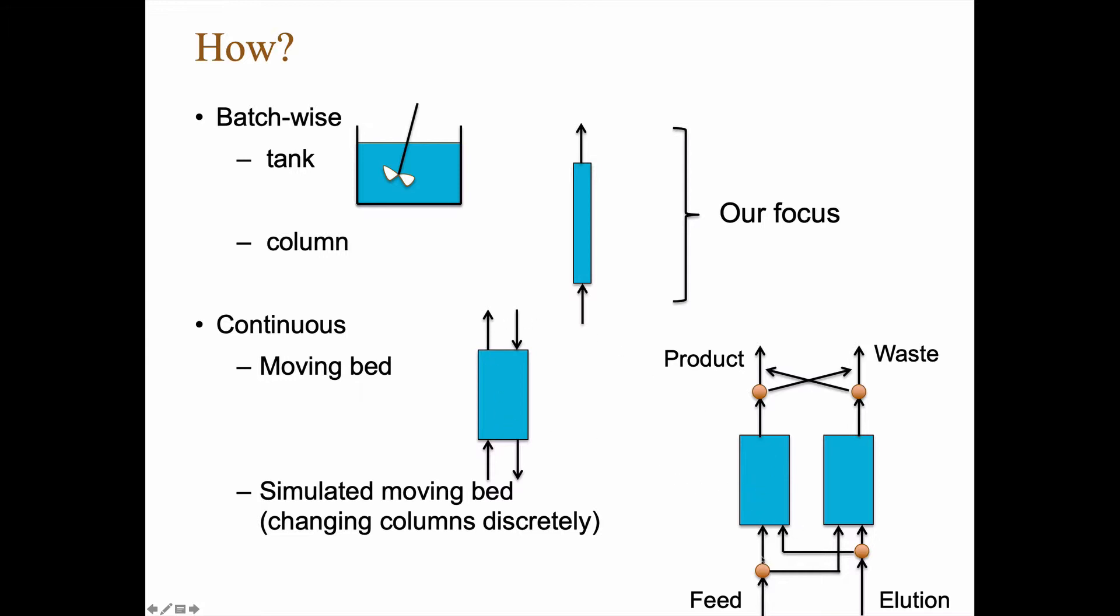And then you switch. So in the simplest case, you only have two columns. So first, you take the feed into one of them, and you make the adsorption happen. And when the product starts to come out, then you change the valve here. So the feed now goes into the other column that is still empty in the sense that it doesn't contain any adsorbed material. It contains an adsorbent, but not no adsorbed stuff.